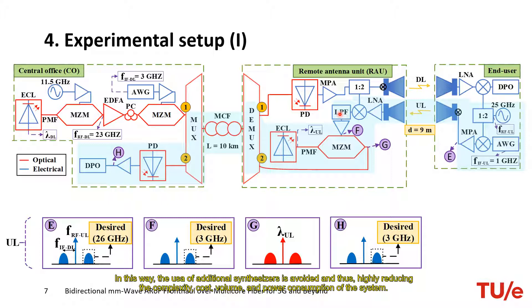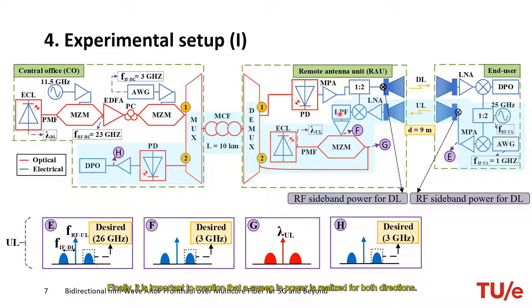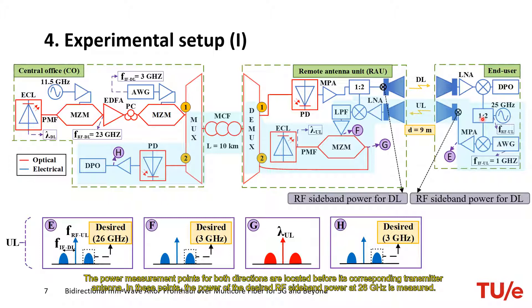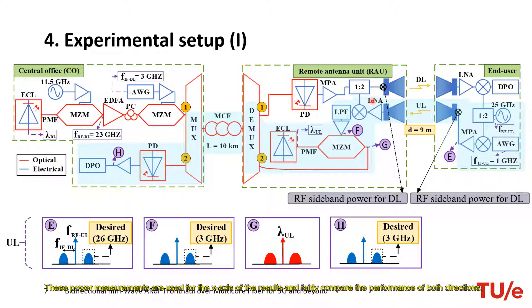Finally, it is important to mention that a sweep in power is realized for both directions. The power measurement points for both directions are located before its corresponding transmitter antenna. At this point, the power of the desired RF sideband at 26 GHz is measured. These power measurements are used for the x-axis of the results and fairly compare the performance of both directions.